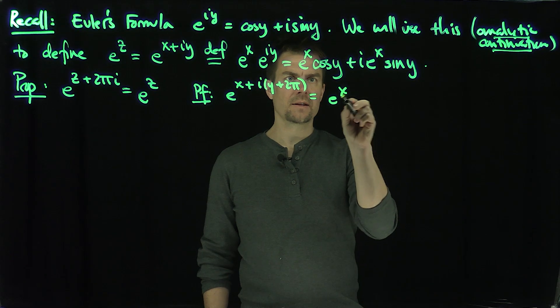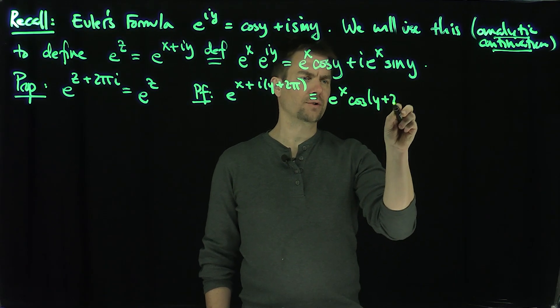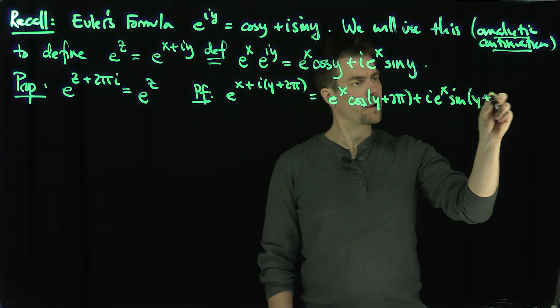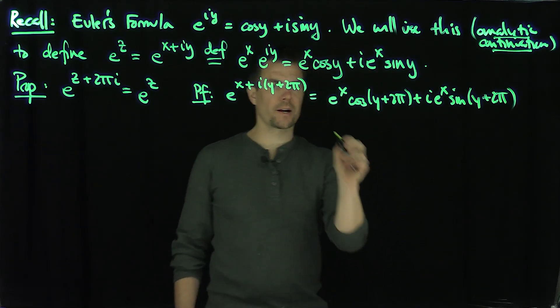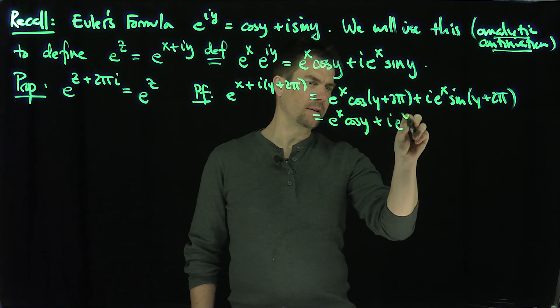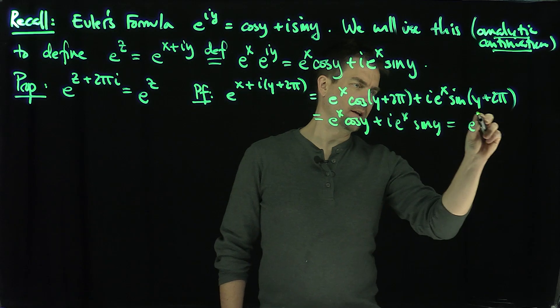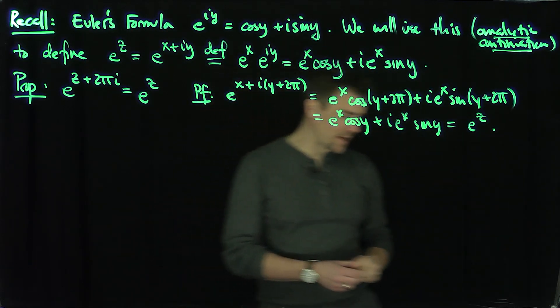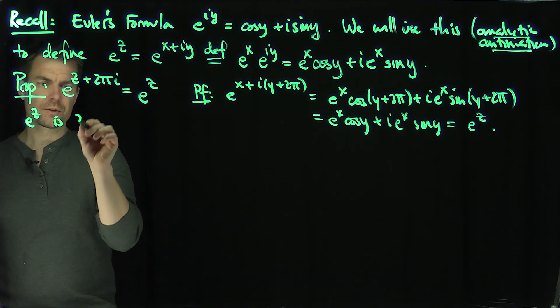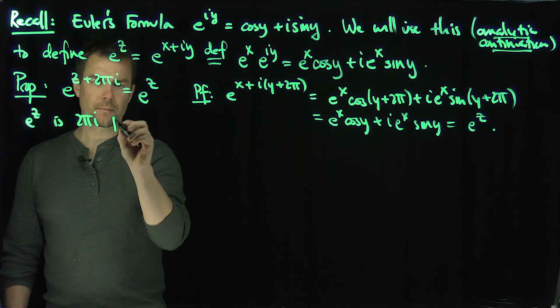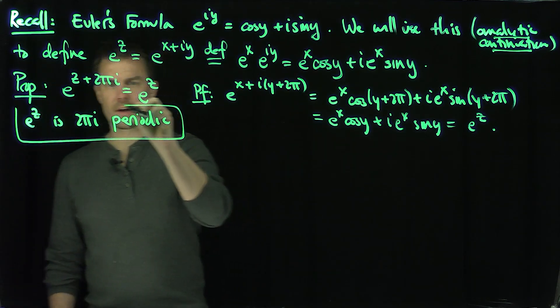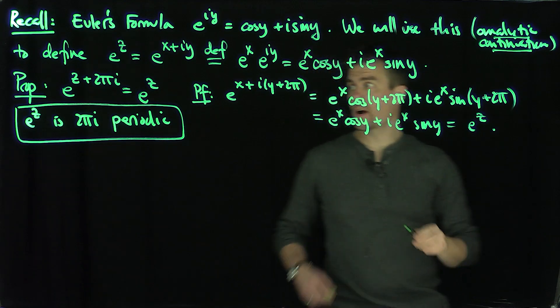Now sine and cosine are 2π periodic functions. So this is e^x times cosine y plus i times e^x times sine y, and that's exactly e^z. We have this remarkable property that e^z is 2πi periodic. Hence e^z is 2πi periodic. In other words, e^z is a complex valued periodic function with a complex valued period.